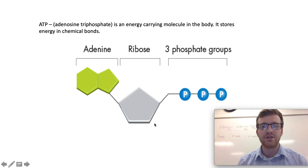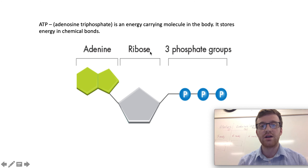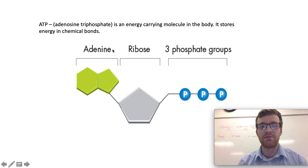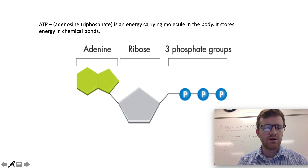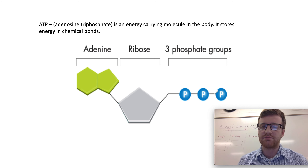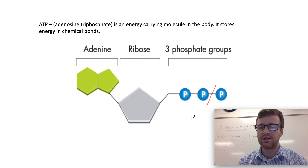If you've already learned the structure of DNA, some of this stuff should sound familiar. Ribose is actually an RNA, and adenine is one of the nitrogen bases in DNA. So those two connect and then we add three phosphate groups and we have ATP. We have two phosphate bonds linking these phosphate groups, and if you were to break one of these bonds, it releases a tremendous amount of energy.